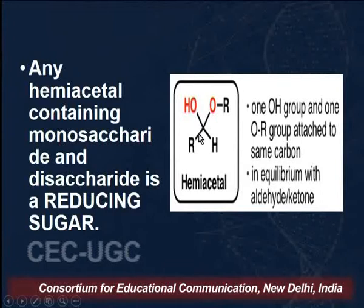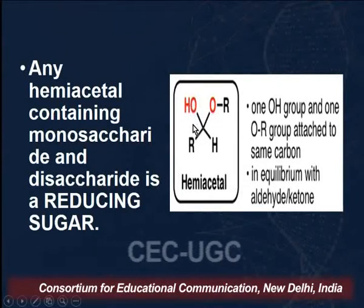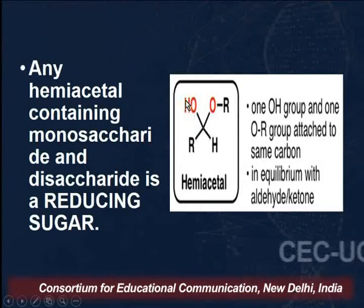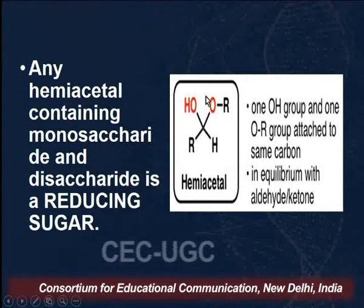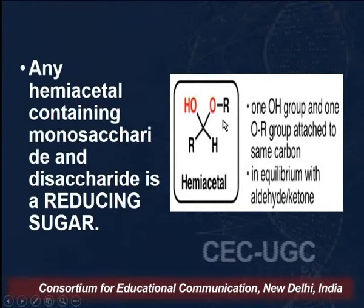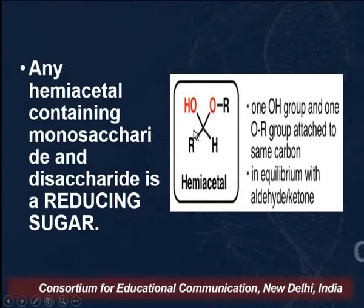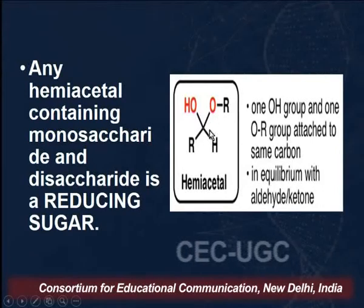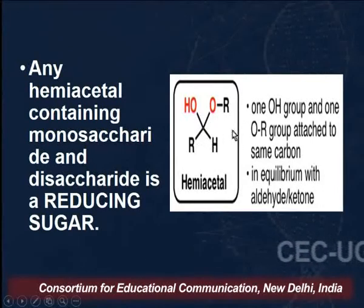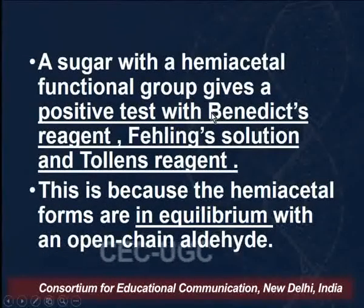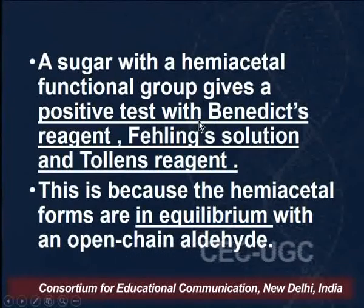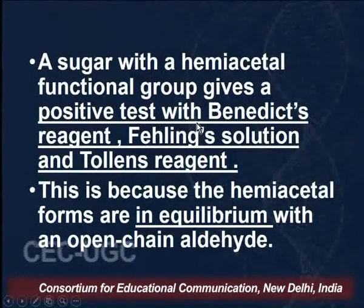For a hemiacetal, the ring carbon should be attached to an OH group, an ether (OR) group, and an H group. If this group is present, the molecule will exist in equilibrium with the open chain structure — which may be an aldehyde or a ketone — and it will give a positive Fehling's test. A sugar with a hemiacetal functional group gives a positive test with Benedict's reagent, Fehling's solution, and Tollens' reagent.